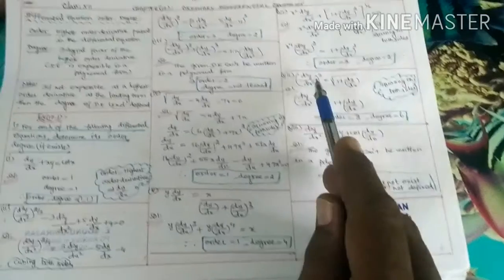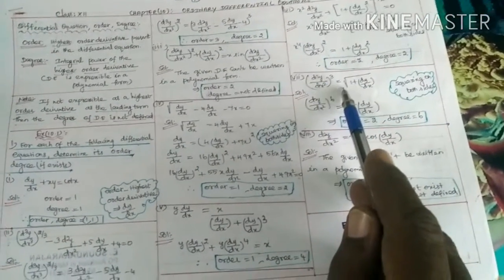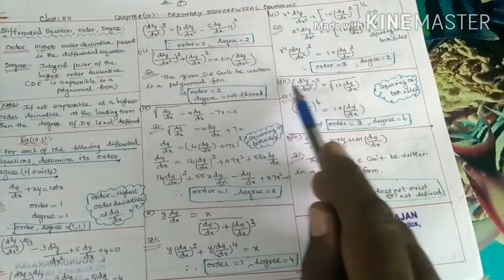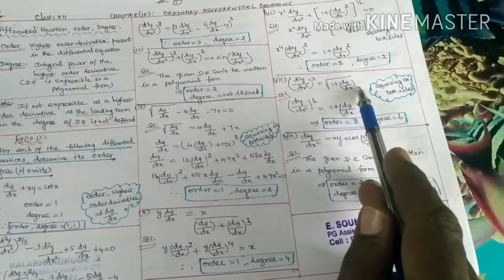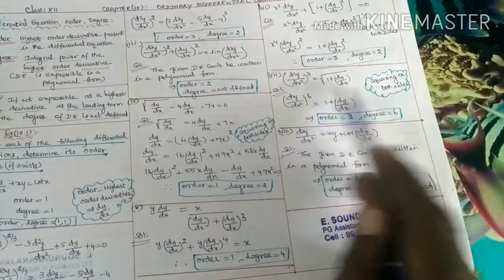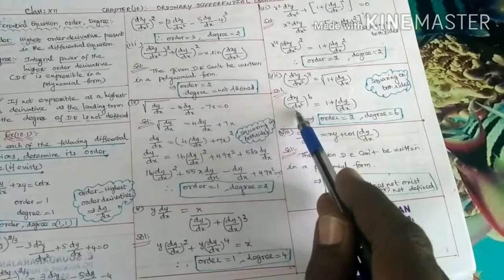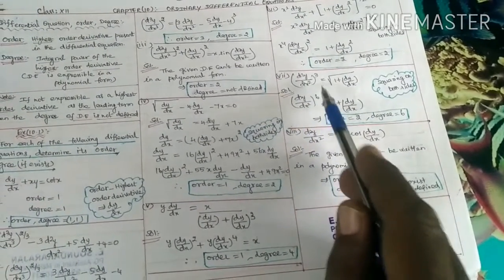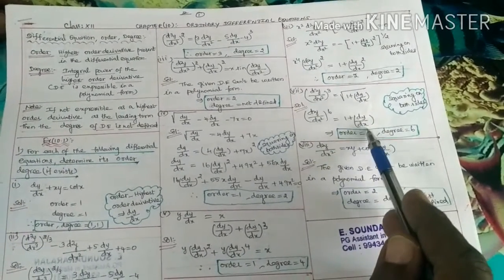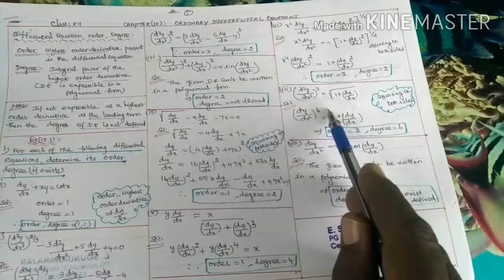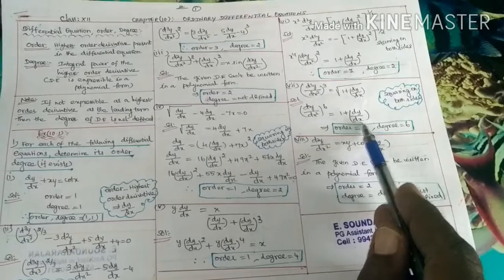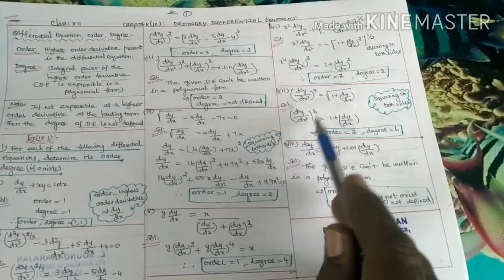Seventh question: (d²y/dx²)³ = √(1 + dy/dx). The right-hand side has a square root, which is a power of 1/2. We square both sides to eliminate the root: [(d²y/dx²)³]² = 1 + dy/dx, giving (d²y/dx²)^6 = 1 + dy/dx.